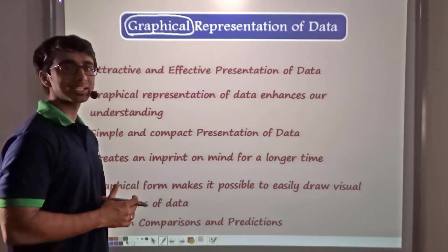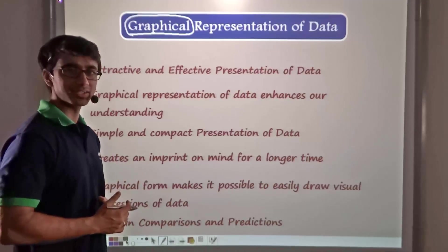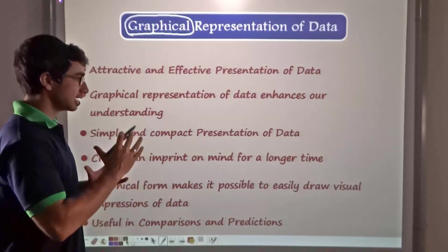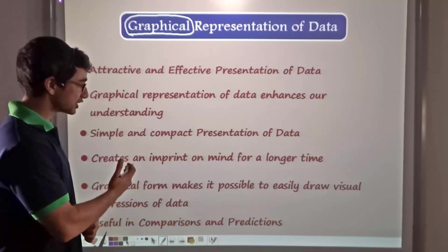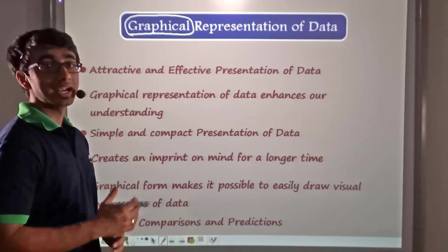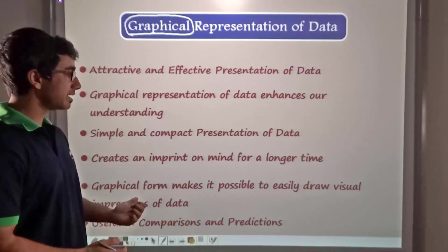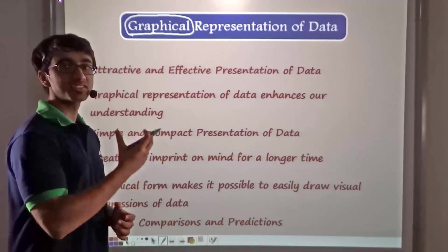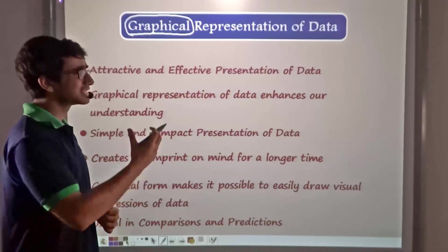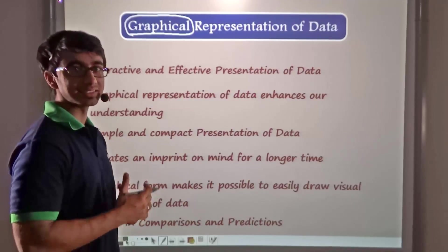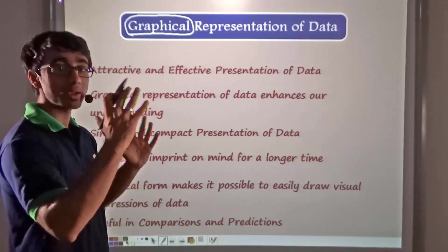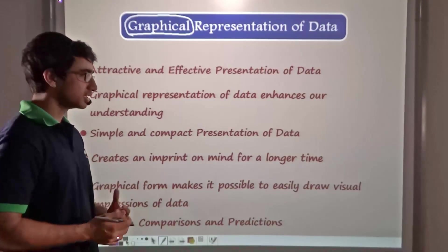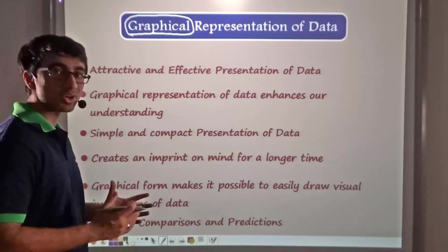If data is given to you in numbers and in a jumbled format, will it really make a lasting impression on your mind? Not really. On the other hand, if that data has been represented in a very aesthetic manner on a graph, it will actually create an imprint on your mind which will stay for a long time. Graphical form makes it possible to easily draw visual impressions of data. A simple number from house to house won't give much meaning if there are so many houses to consider, but representing this data in the form of a graph makes it easier to draw certain conclusions.